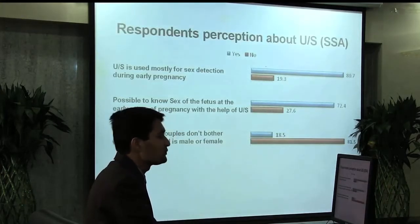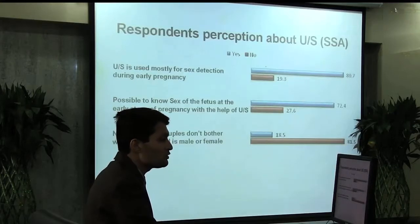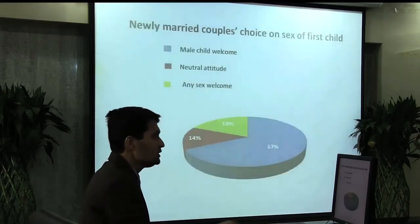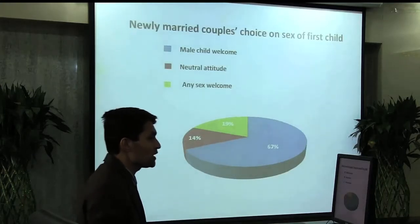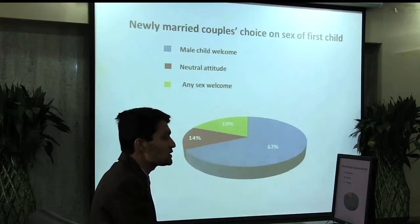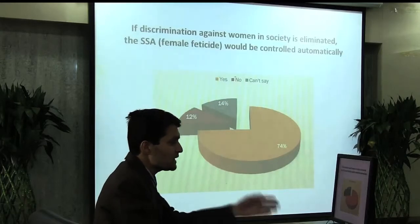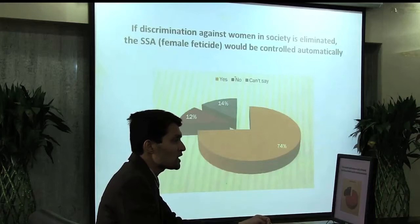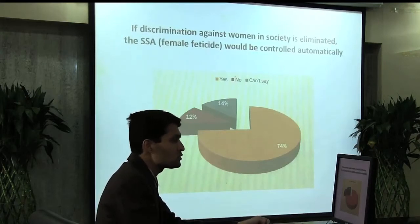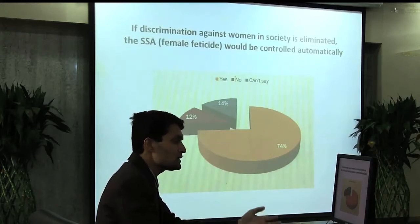Newly married couples don't bother whether the first child is male or female — 81.5% said no (meaning they do care), and 18.5% said yes. Regarding newly married couples' choice on the sex of the first child: male child welcome constitutes 67.7%, neutral attitude only 14%, and any sex welcome only 19%. If discrimination against women in society is eliminated, sex-selective abortion would be controlled automatically — 74% said yes, 12% said no, and 14% couldn't say.